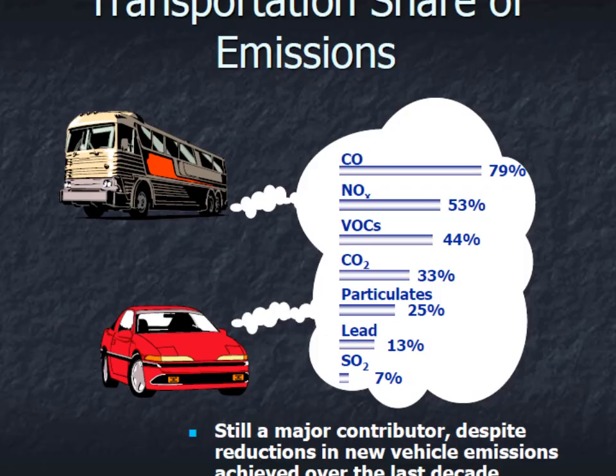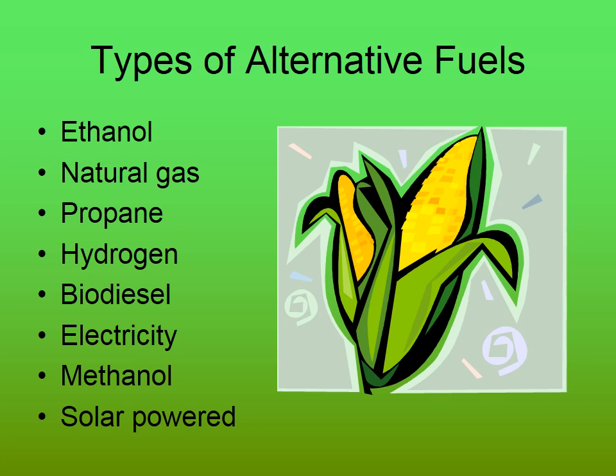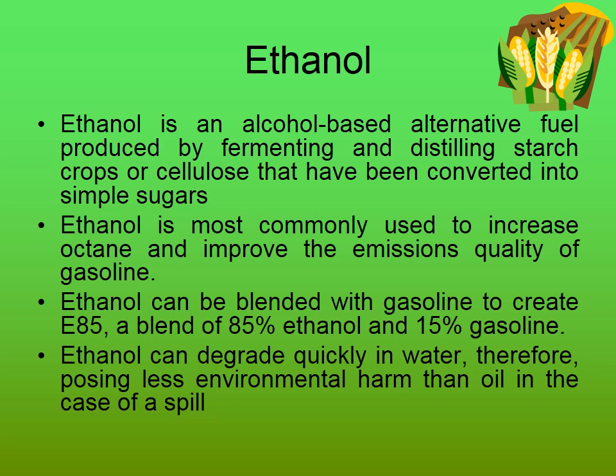Exhaust emissions from vehicles and transport are severe — this situation becomes aggravated. This pollution is hazardous to human health as well as to our atmosphere and the greenhouse environment. Various types of alternative fuels include: ethanol, natural gas, propane, hydrogen, biodiesel, electricity, methanol, and solar energy. These are the various types of alternative fuels we are going to discuss.